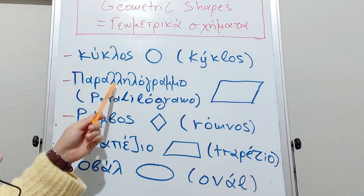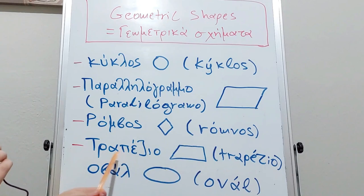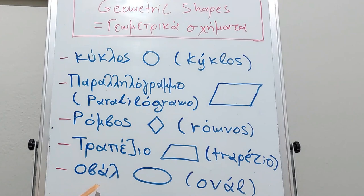Double mu - attention to the spelling. Ρόμβος (rhombus). Τραπείζιον is τραπέζιο (trapezoid). And oval in Greek is οβάλ - this is the shape of eggs.